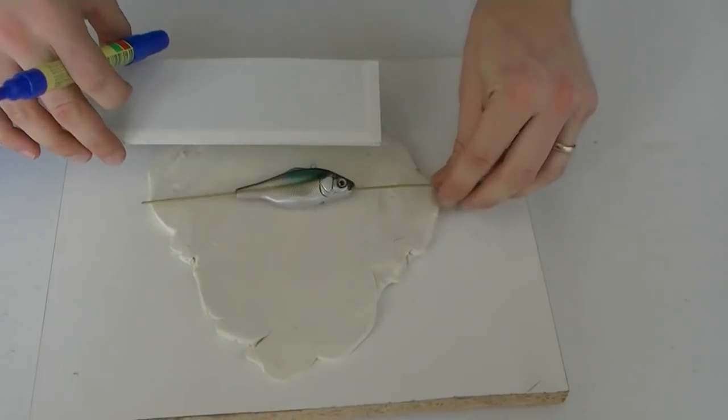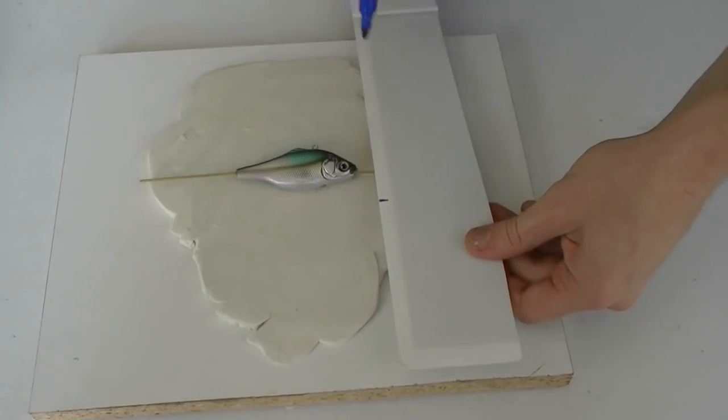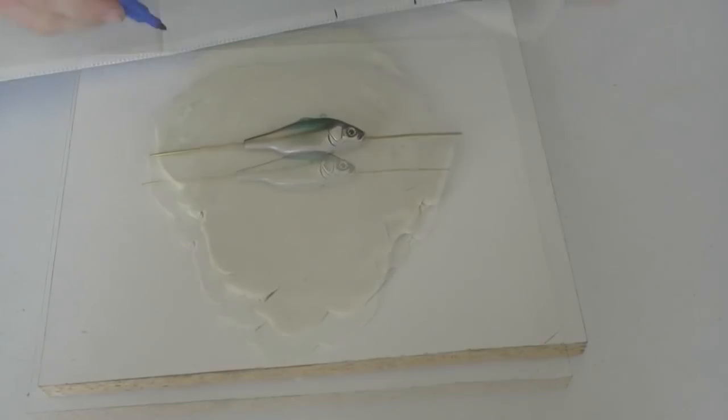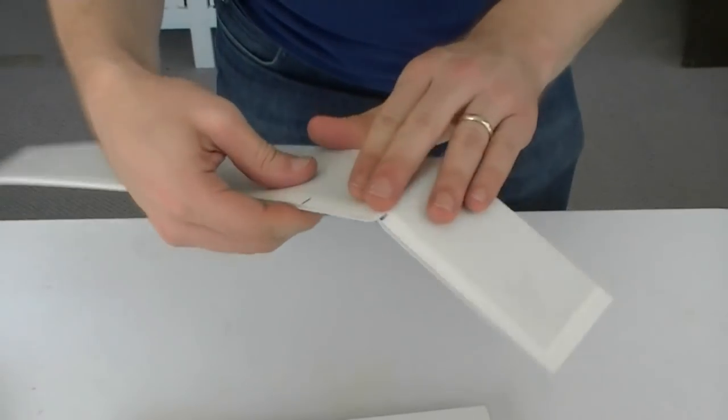Next, take some fluted signboard or a firm core board and mark out the extents of the required mould. Bend the board at these markings to form a complete mould box.